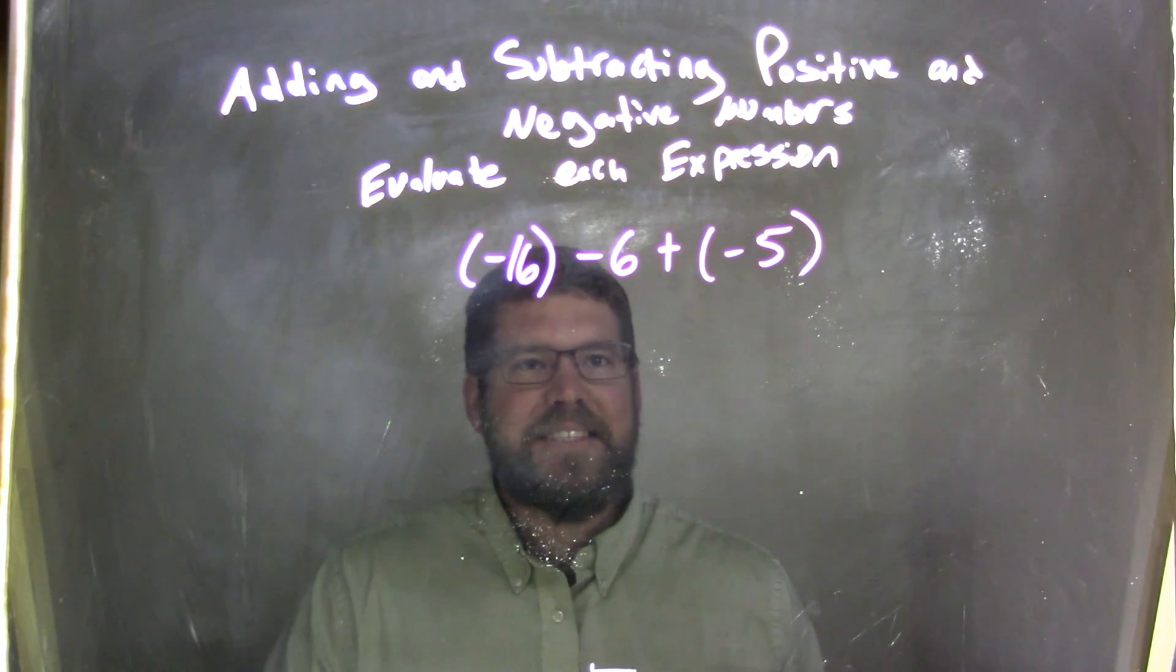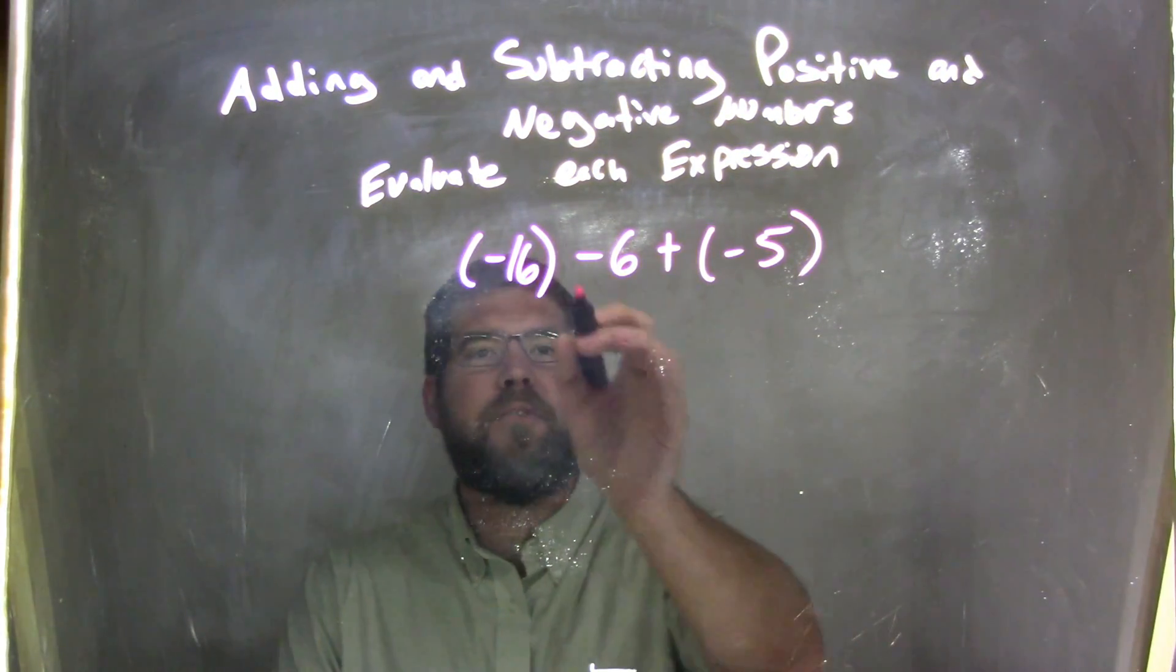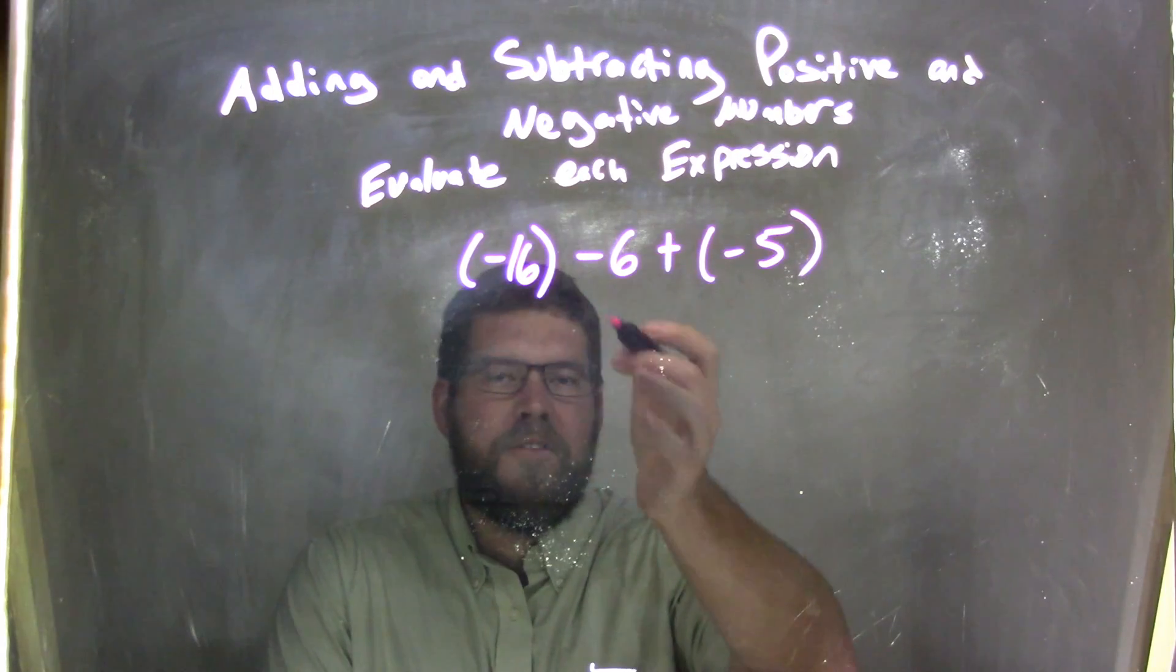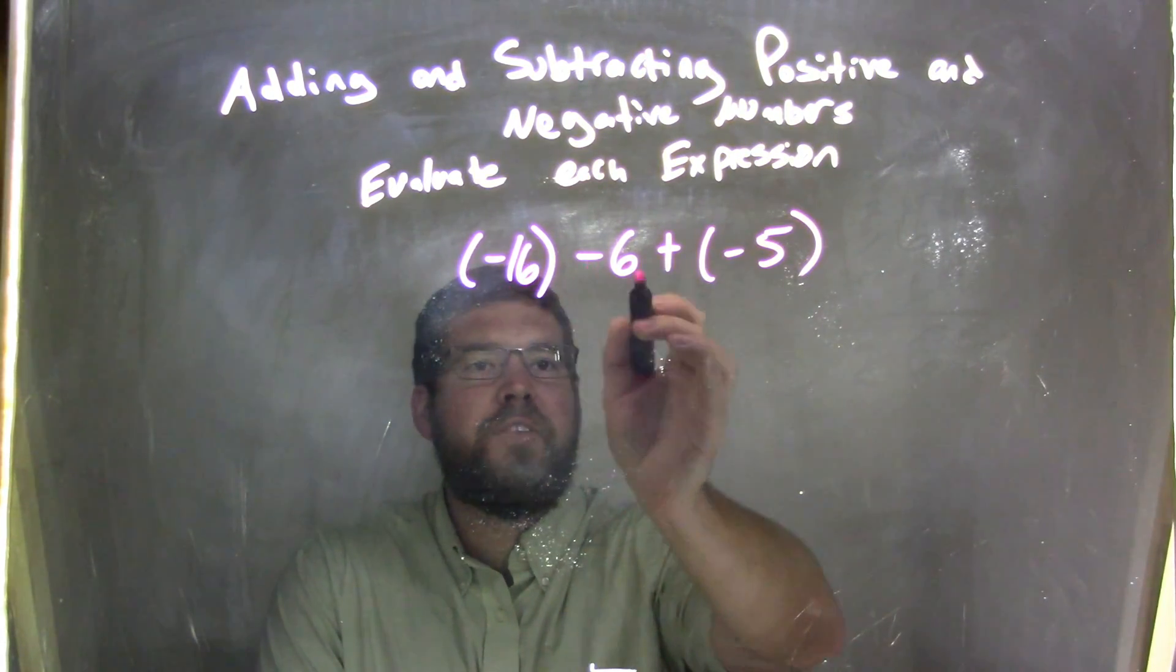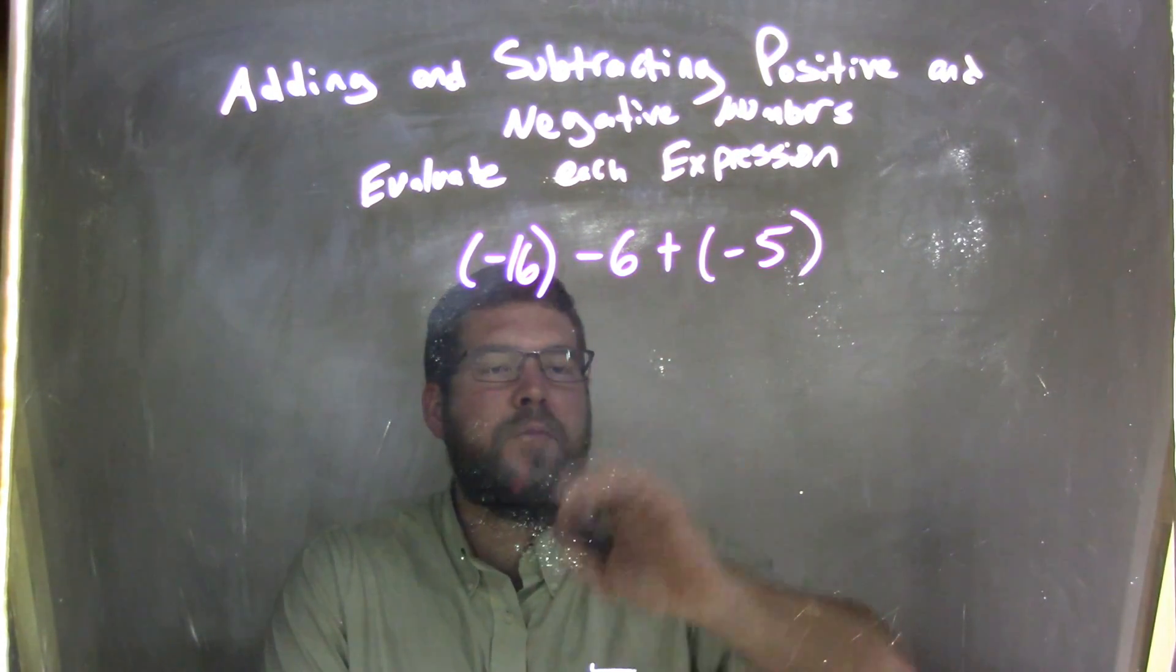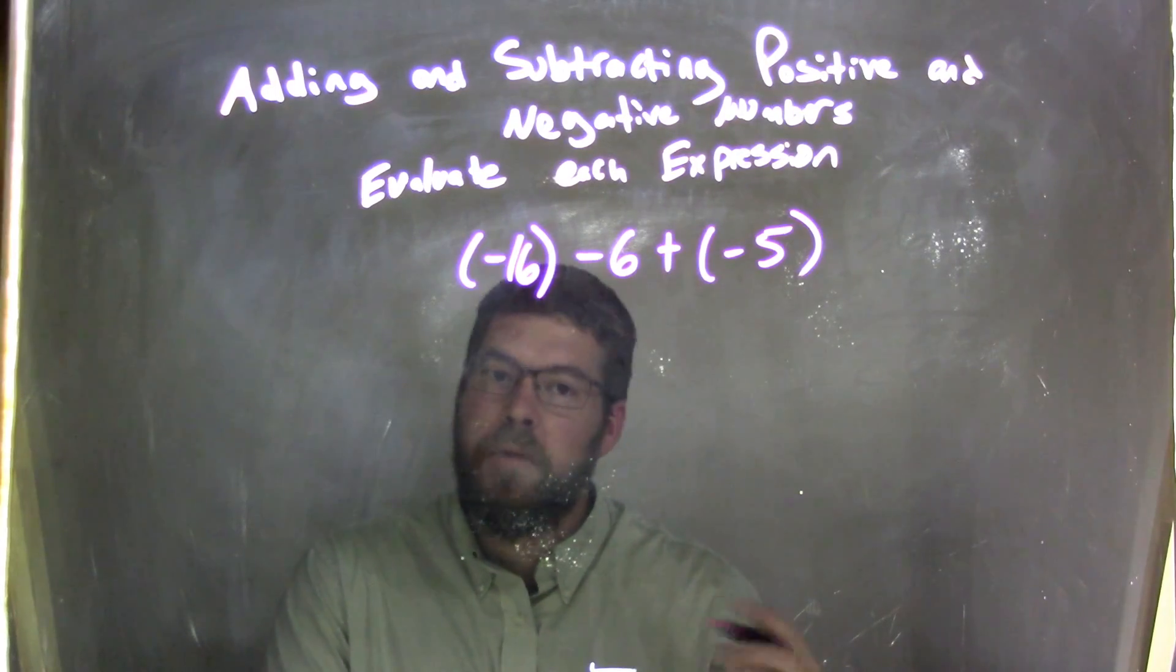I like to see everything all the same type of numbers sometimes, all addition or all subtraction. We have negative 16 minus 6 plus negative 5. I can make these all to be plus a negative. So negative 16 minus 6 turns into plus negative 6.